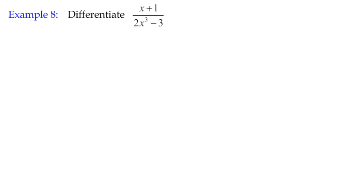This is example eight in the differentiation topic. We're looking at the quotient rule, having done the product rule. The quotient rule is basically a different version of that, a reordered version of the same principle.